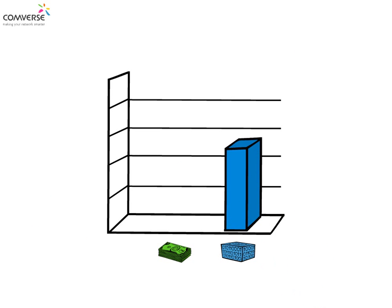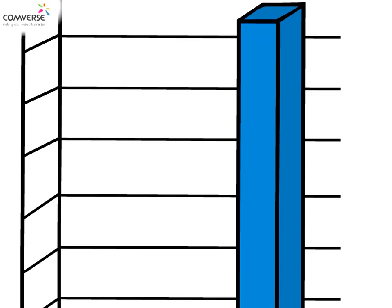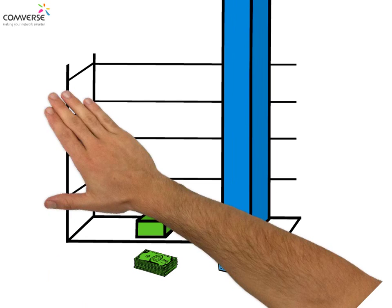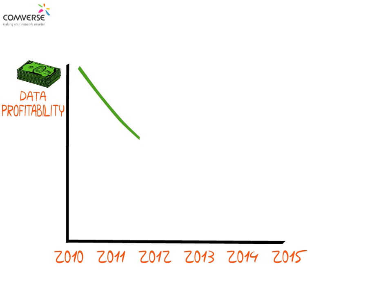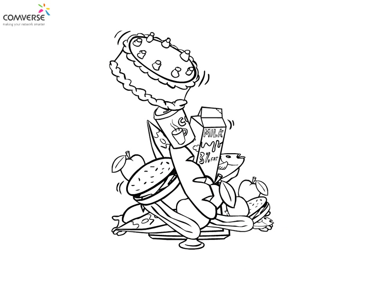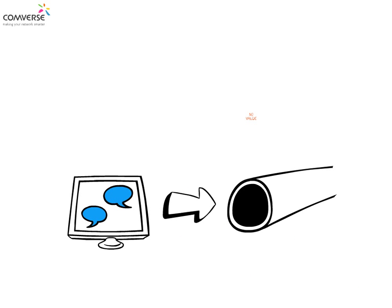Mobile data traffic is growing exponentially, but the revenues that are expected to support this massive growth lag far behind. Instead of capitalizing on the immense data opportunity, operators are facing declining margins. One key reason for this is the flat-rate, all-you-can-eat data models that hinder profitability, turning mobile operators into dumb pipes, providing no value whatsoever for the end user aside from connectivity.